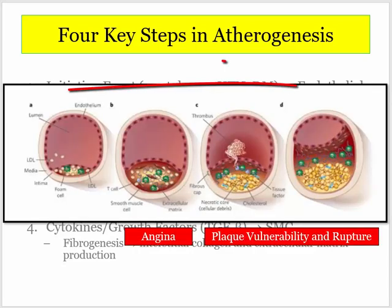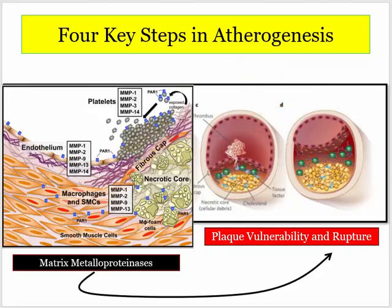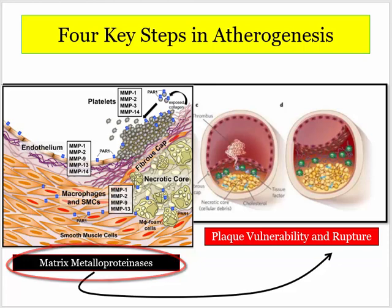They do care about progressive vascular obstruction and the factors that render plaques vulnerable to rupture — that being elaboration of matrix metalloproteinases from a variety of cells, including platelets, endothelium, smooth muscle cells, and the macrophage. We'll come back to this later.